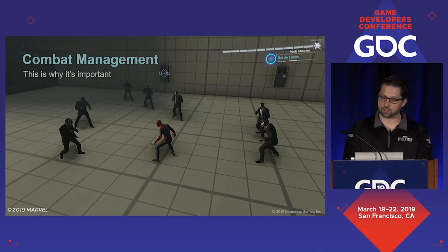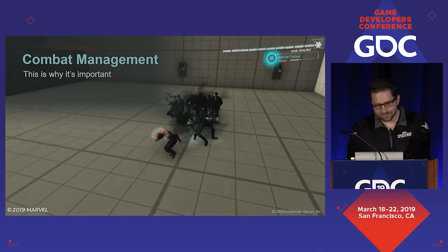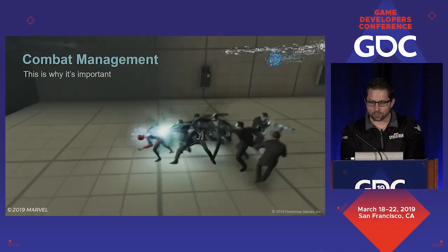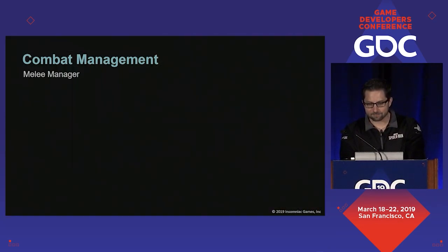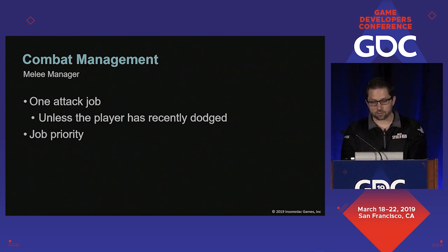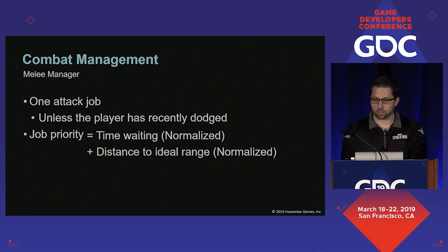We needed to manage attacks and mitigate cheap hits or else the game was going to turn into a mess. We have two combat managers that control when ranged and melee enemies are able to attack, and they occasionally coordinate with each other but mostly operate independently. The job is just a token that allows a bot to attack Spider-Man. Our manager for melee started out simple — we wanted there to be one attack job unless the player had recently dodged, and then we wanted to give him a quick break to fight back. We had a simple scheme deciding which bot received the attack job. We calculated a priority that was the sum of the time the bot had spent waiting for a job, plus how close that bot was to his ideal attack range, plus a bonus value for high priority mini boss style enemies.